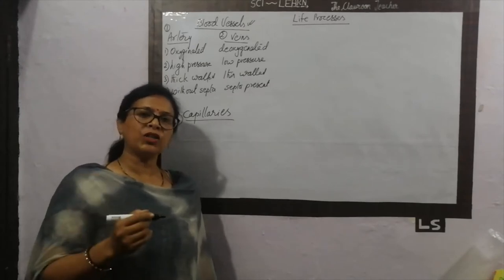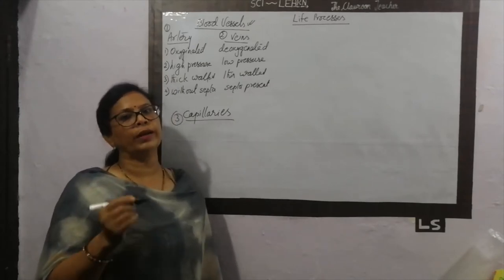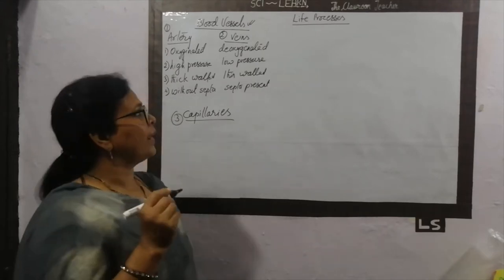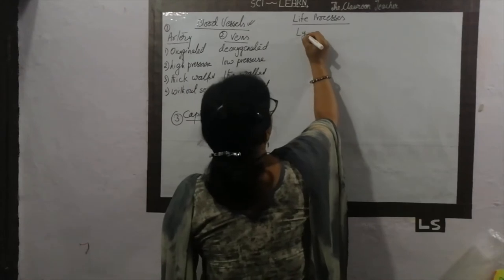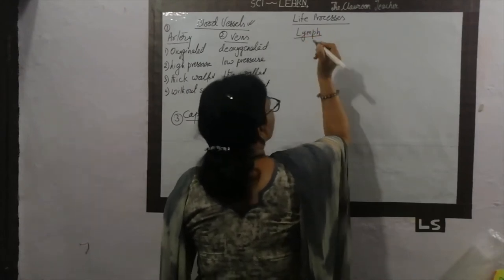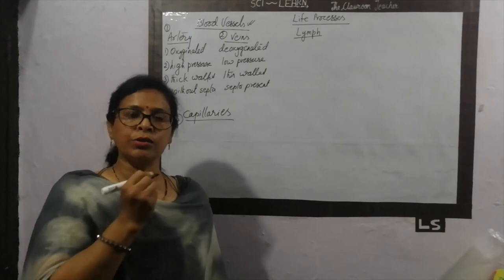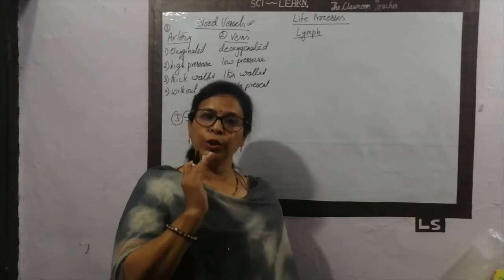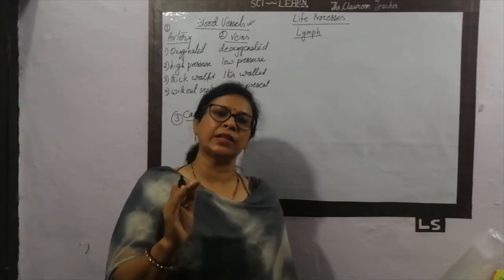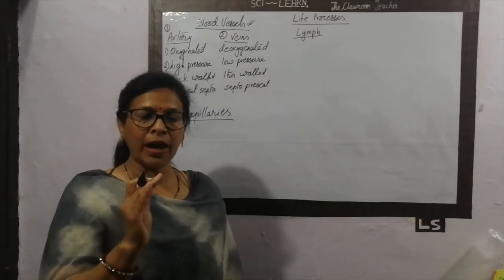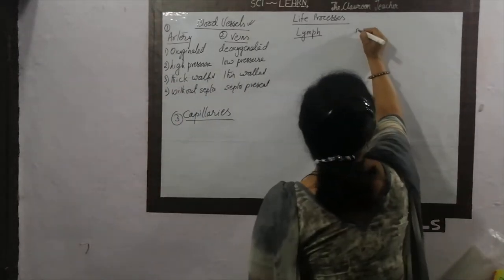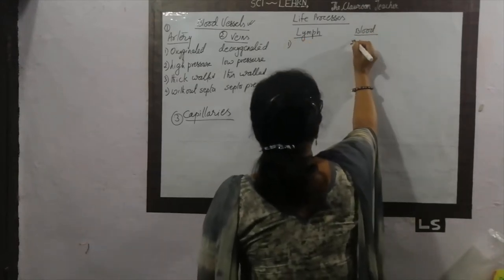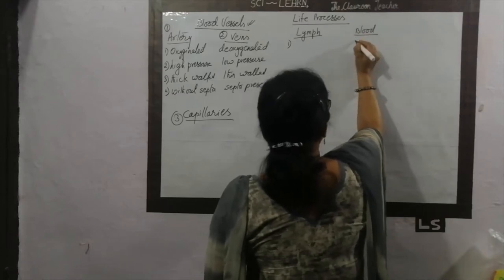This is the part of our circulation with the help of the human body. But one more circulatory substance is present in our body, and that circulatory substance is called lymph. It is also a liquid, a fluid which is present in our body and it also circulates in our body. In human beings, two substances are there for circulation: one is called blood and one is called lymph. Now what is the basic difference between these two?